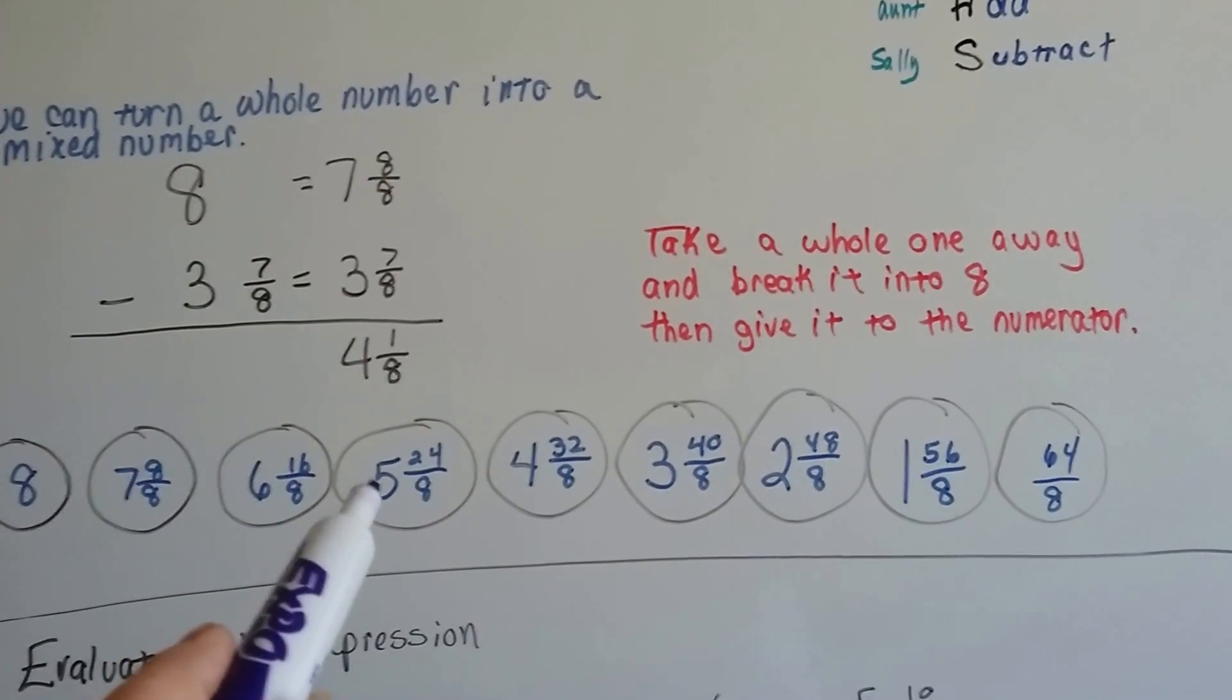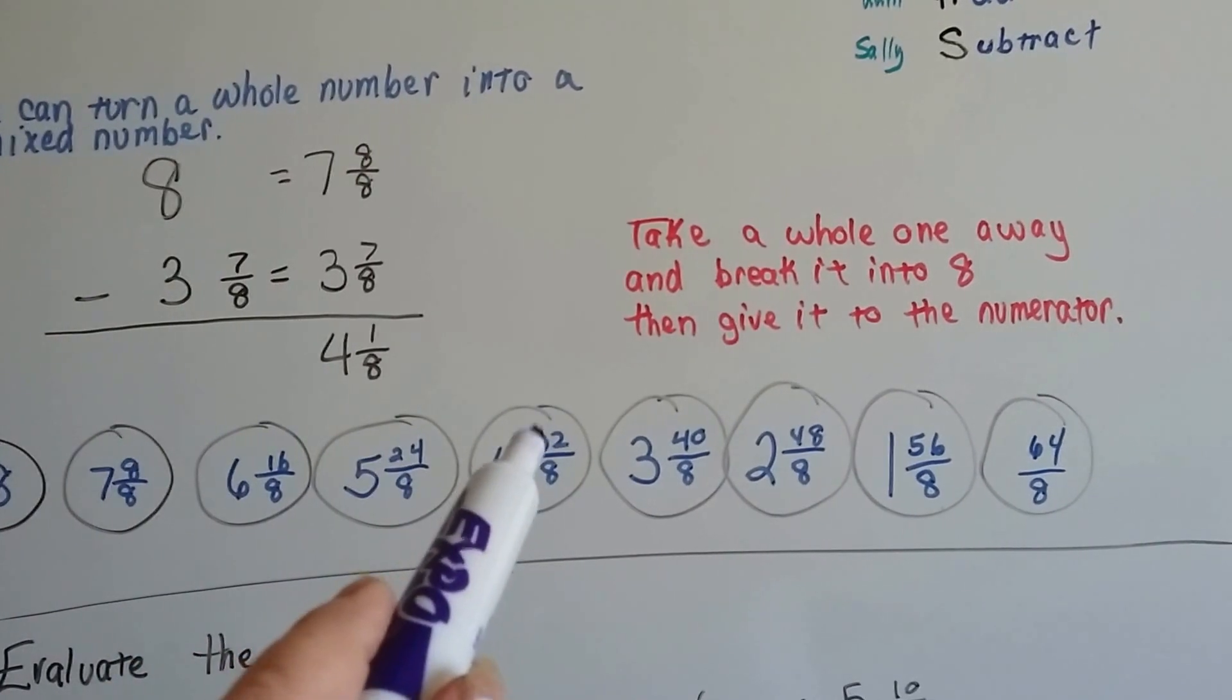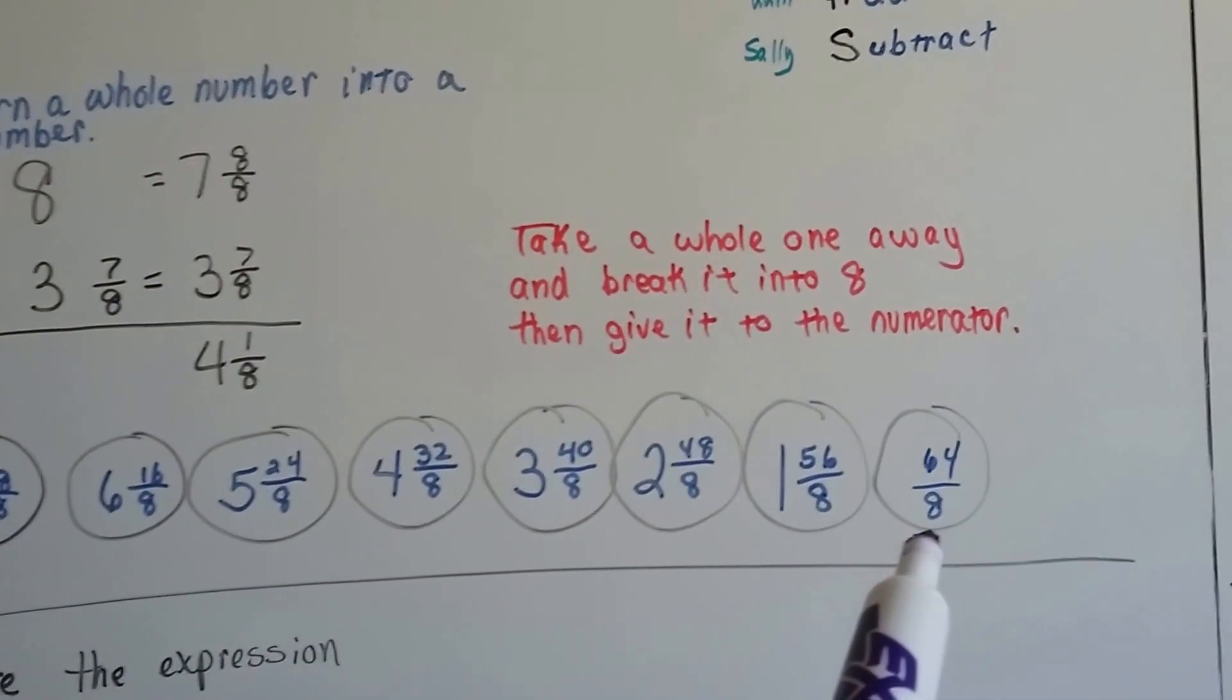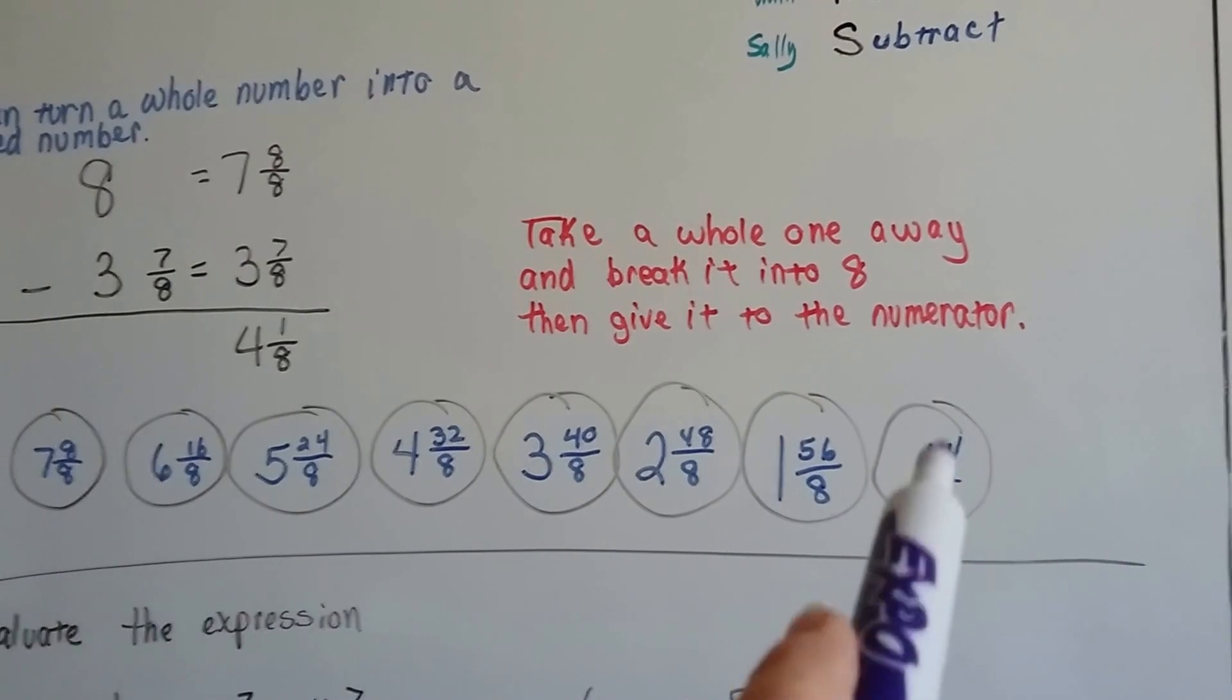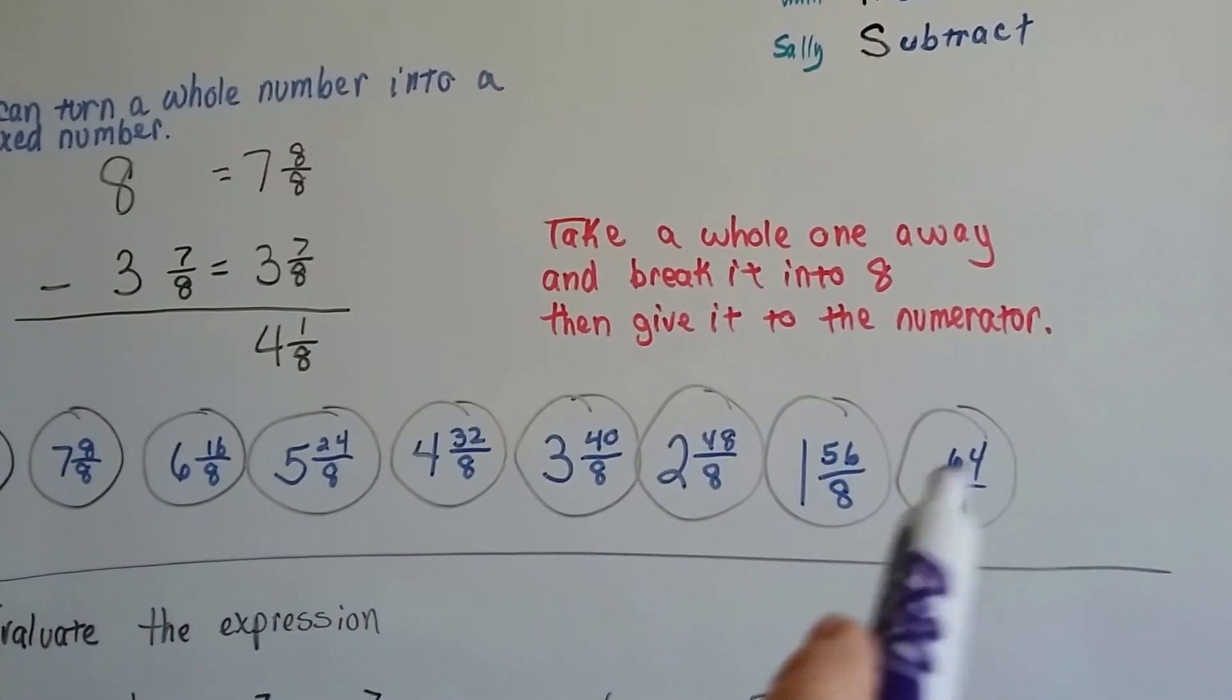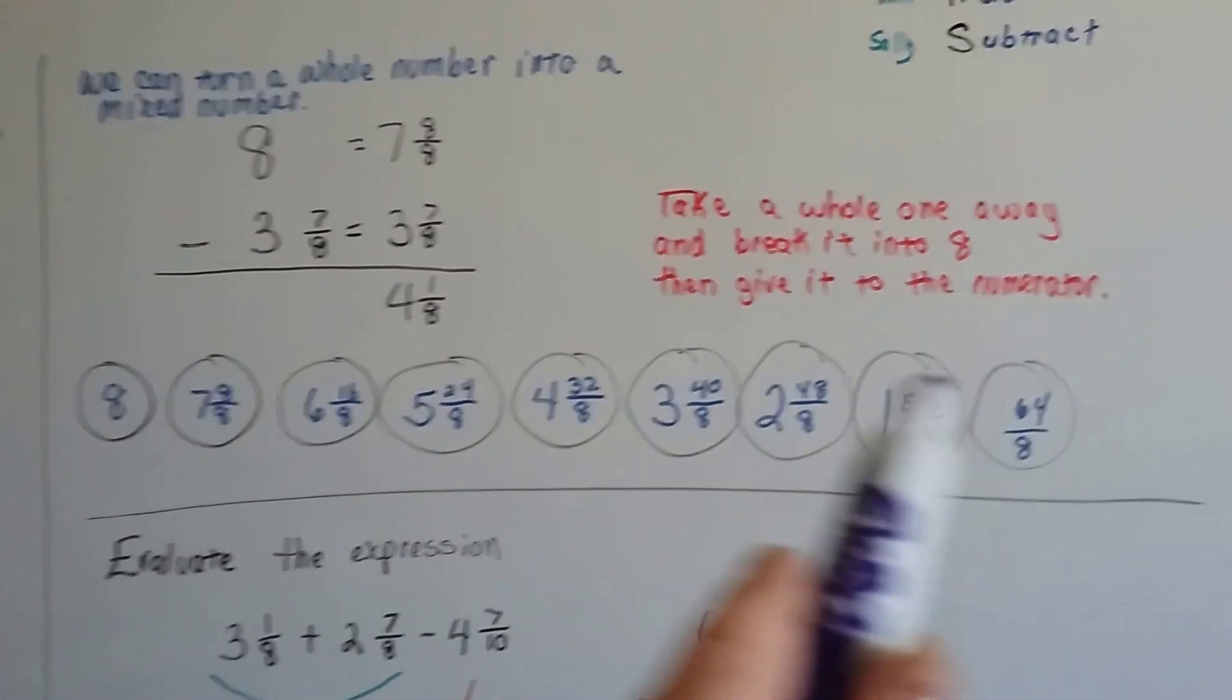5 and 24 eighths. What we're doing is we're pulling another whole one out of each one and taking the 8 and adding it to the numerator each time. By the time we're finished and we do it to all of them, we have 64 eighths, because 8 goes into 64 eight times. It would be reduced to its lowest terms as a whole number 8. So every single one of these equals 8.